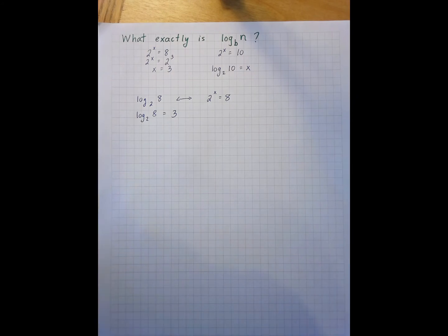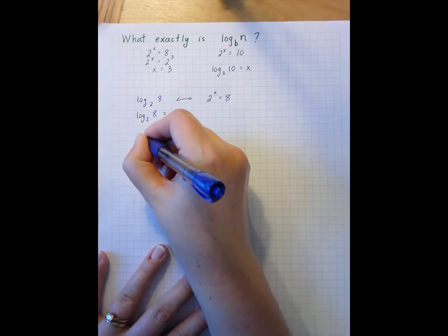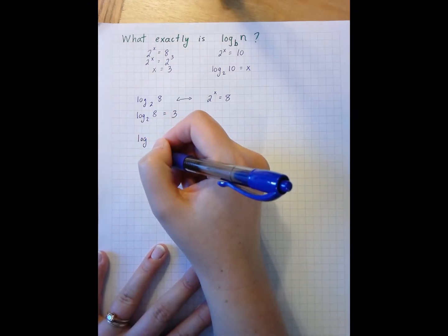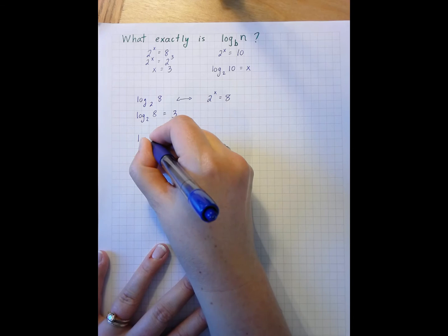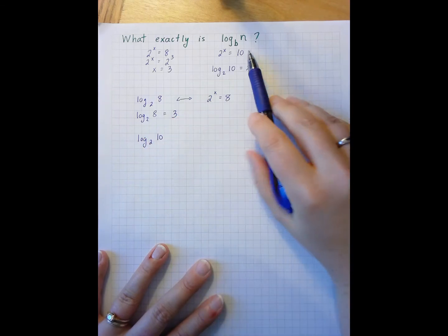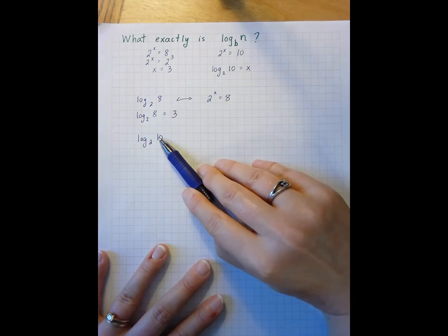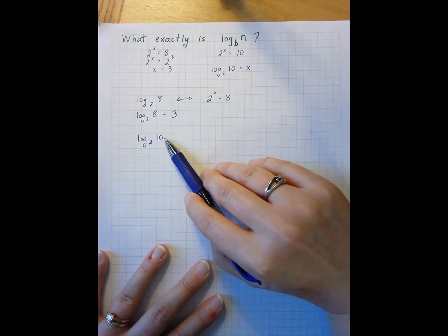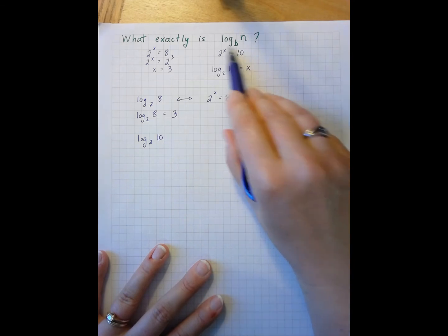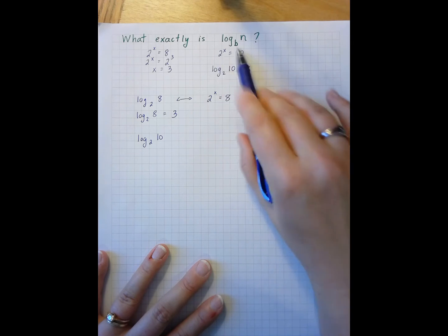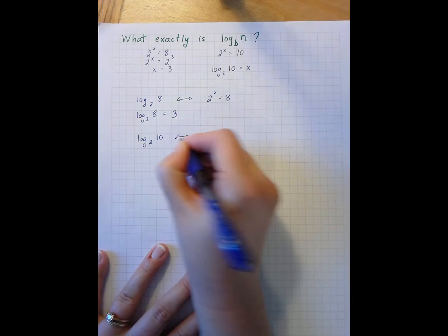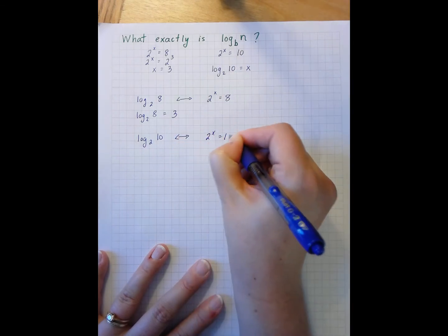However, something like log base 2 of 10, like we saw up here, these are equivalent. I don't know what that is exactly on a number line, but I can estimate this and say, since these are equivalent, 2 to the x equals 10,